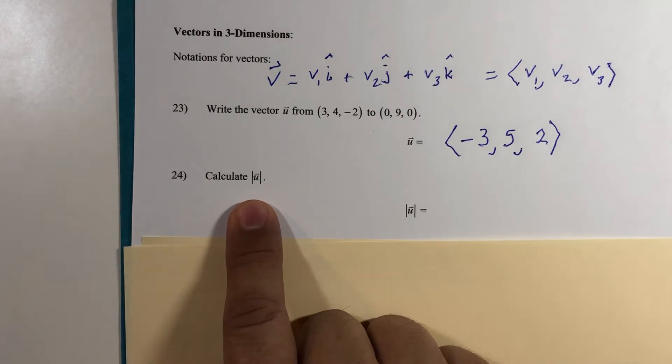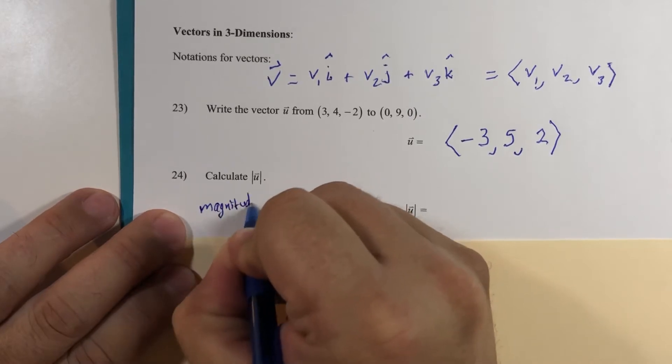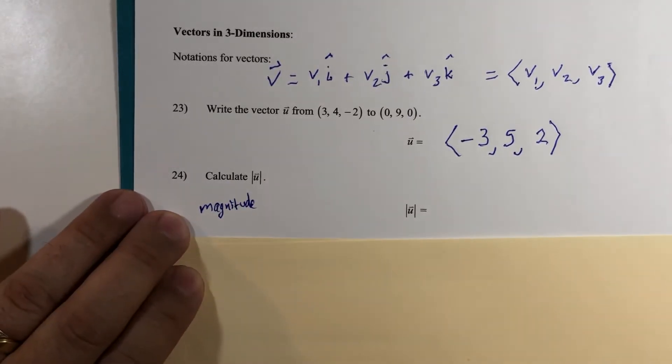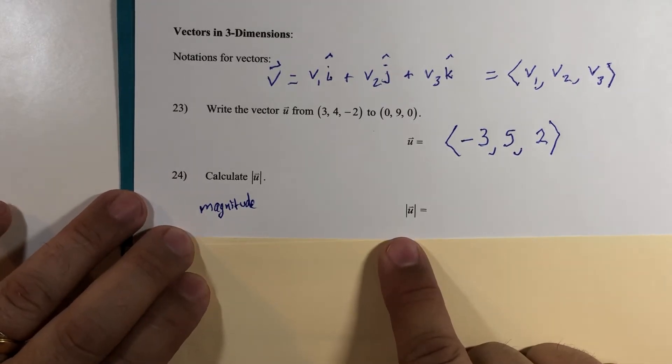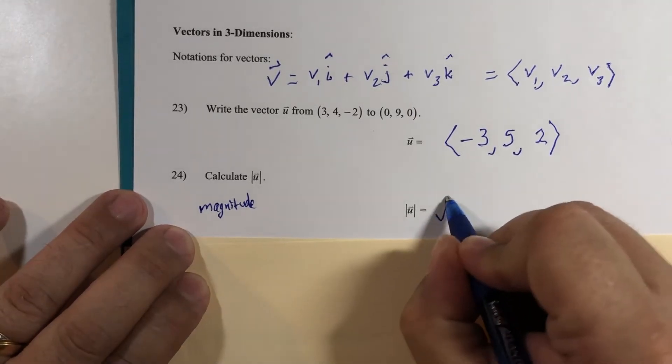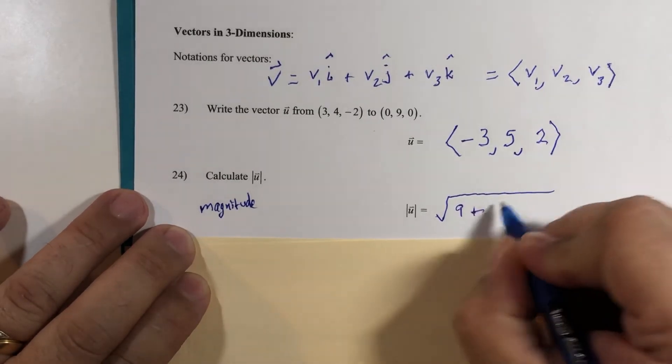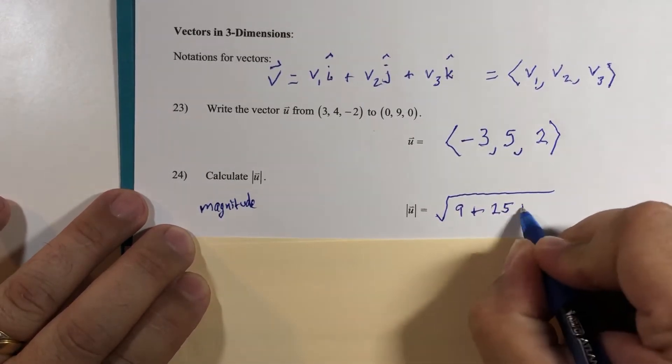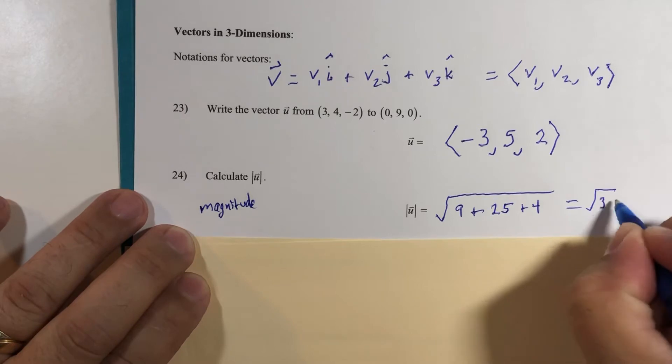Pretty straightforward setup there. So what was this notation again? Oh yeah, this is notation for magnitude. Of course the textbook uses double bars around it, but we're going to use single bars - most of my grad professors used it. The magnitude is, so -3 squared is 9, and 5 squared is 25, 2 squared is 4, so the square root of 38, or slightly more than 6 units if we were measuring it as a decimal value.